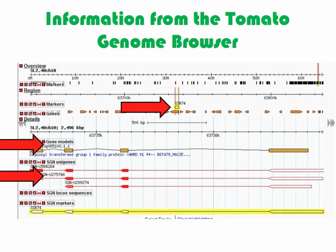The unigene information also indicates that SSR74 is part of a gene. Knowledge of the gene within which a marker is located can be highly informative if, for example, the marker is highly correlated with a phenotype. To find out more information about a gene model or unigene, such as the DNA sequence, mRNA sequence, location of introns and exons, and gene ontology terms, simply click on the gene name. You can learn more about using the tomato genome browser by clicking on the tutorial link on the main page of the Breeders Toolbox.